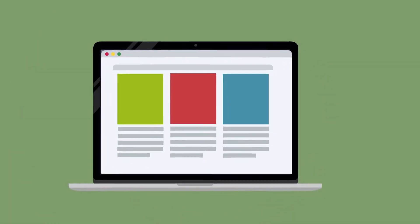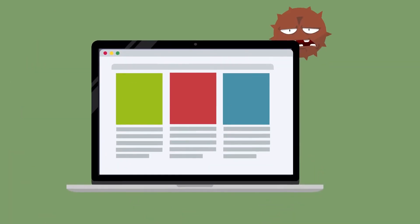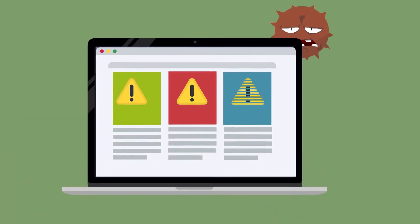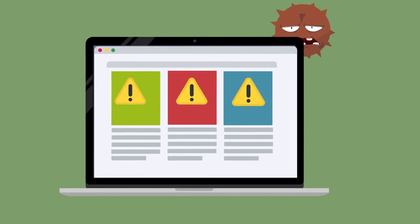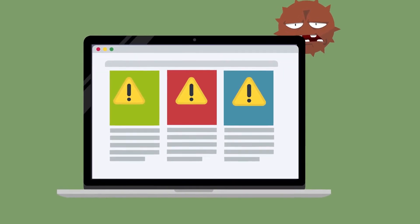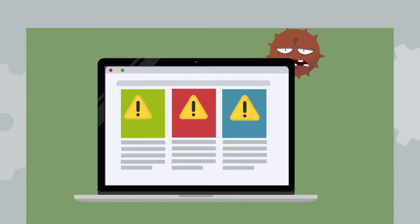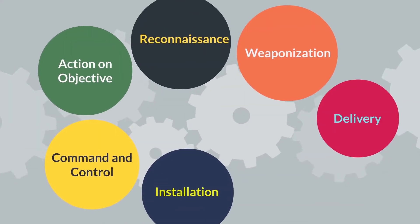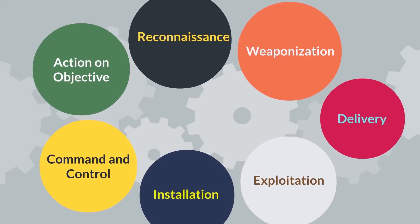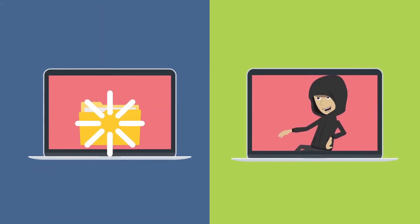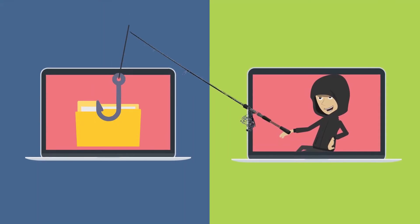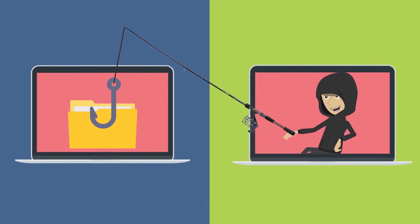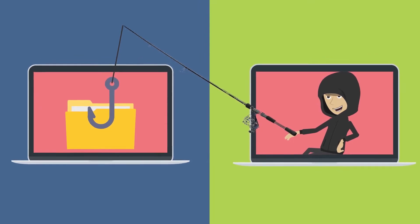Did you know, on average, advanced cyberattacks can nest inside a network for more than 200 days before discovery? An attack vector known as the cyberattack cycle enlists malicious hackers to target less secure vendors to then gain access to larger targets.